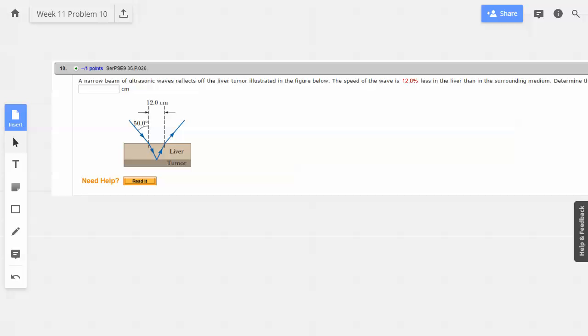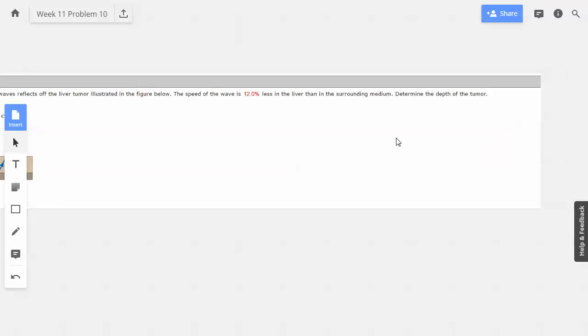Week 11, problem 10. A narrow beam of ultrasonic waves reflects off the liver tumor illustrated in the figure below. The speed of the wave is 12% less in the liver than in the surrounding medium. Determine the depth of the tumor.